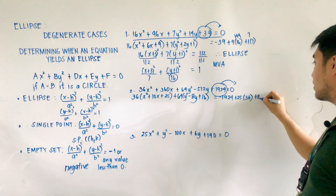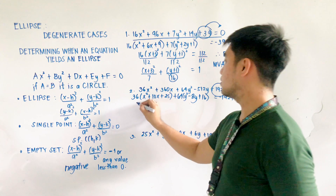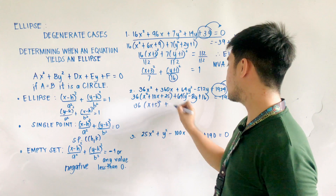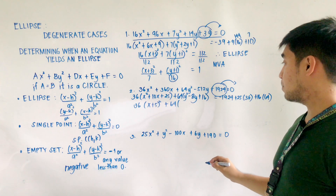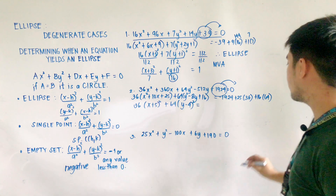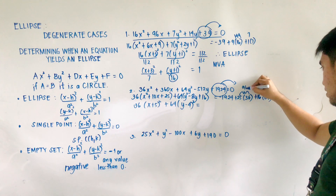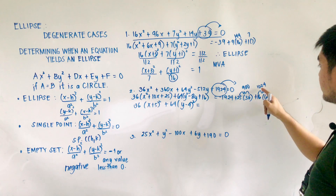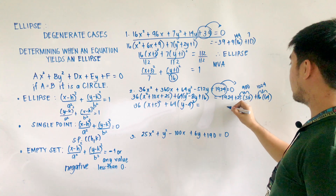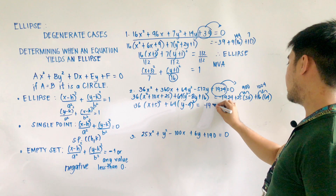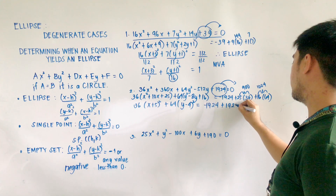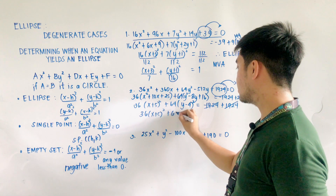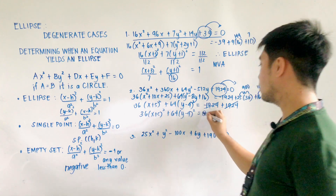Factoring: 36(x + 5)² + 64(y − 4)² = 25 × 36 = 900, plus 16 × 64 = 1024. So 900 + 1024 = positive 1924. Therefore this is −1924 + 1924, which cancels out. So we have 36(x + 5)² + 64(y − 4)² = 0. Therefore, it is a single point.